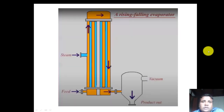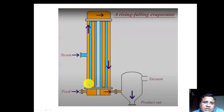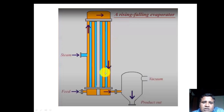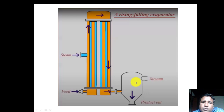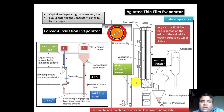Here is the diagrammatic representation of the combined rising and falling film evaporator. The yellow line indicates the product and the blue line indicates the tube. The product moves up, then after reaching the top it comes back down, and after coming down we feed it into the separator where we collect the concentrated product as well as the vapors.